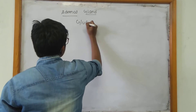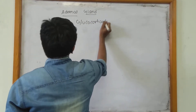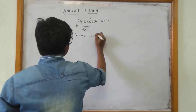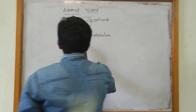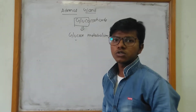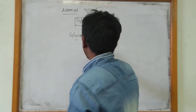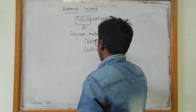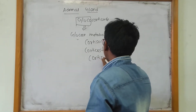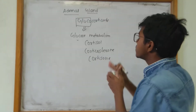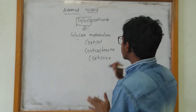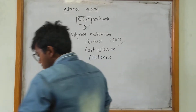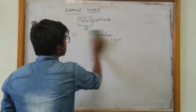As the name suggests, glucocorticoids have a permissive action on glucose metabolism. They are mainly concerned with the metabolism of carbohydrates, and more specifically with the metabolism of glucose. The glucocorticoids mainly produced in our body are cortisol, corticosterone, and cortisone. Among these, cortisol has the major action, accounting for about 90% of glucocorticoid activity.